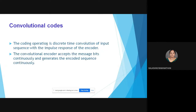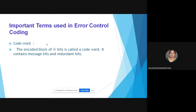In convolutional codes, the coding operation is a discrete-time convolution of the input sequence with the impulse response of the encoder. The convolutional encoder accepts message bits continuously and generates the encoded sequence continuously. In a convolutional code word, the code word represents the encoder block of n bits, and it contains message bits and redundant bits.